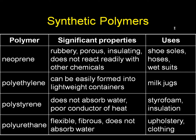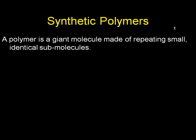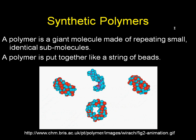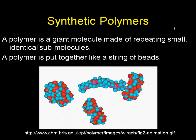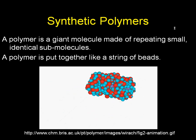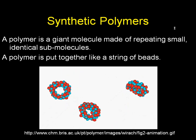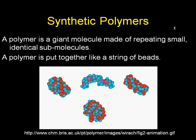Polyurethane is a flexible, fibrous fiber that does not absorb water, used in upholstery and clothing. A polymer is basically a giant molecule made of repeating small identical sub-molecules put together like a string of beads. We have an example animation here from the site on the bottom — you can see the polymer polymerizing from these little sub-molecules.